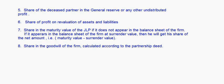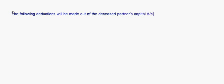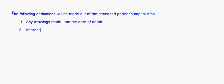These are the payments the executor will have to be given. Now let's see the deductions that will be made out of the deceased partner's capital account. The following will be deducted: first, any drawings made up to the date of death; second, interest on drawings; third, if there is a loss on revaluation of assets and liabilities, that will be deducted.